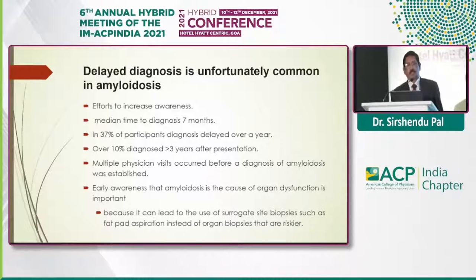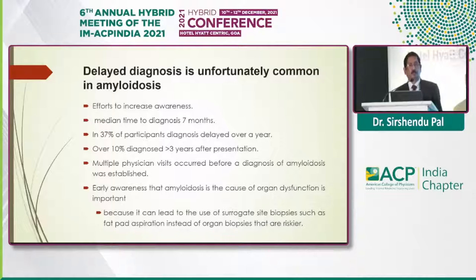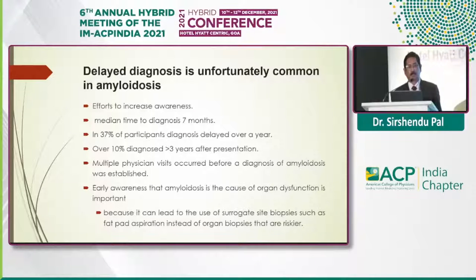Delayed diagnosis is very common in amyloidosis. We need increased awareness among physicians and, if possible, patients. The median time to diagnosis is seven months; in 37 percent of patients, diagnosis may be delayed by over a year, and over 10 percent are diagnosed more than three years after presentation. Early awareness may lead to the use of surrogate site biopsies such as fat aspiration from the abdomen, instead of riskier organ biopsies.